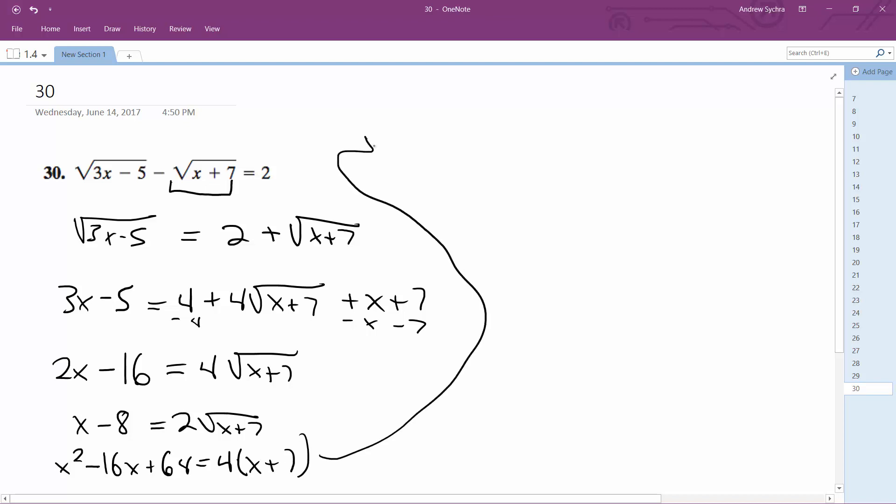Alright, so moving up. 4x plus 28 minus 28 minus 4x. x squared minus 20x, this ends up being plus 36.